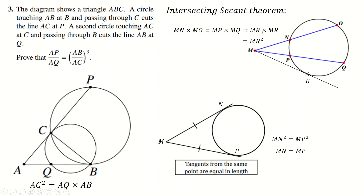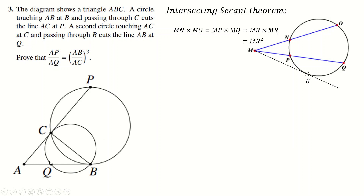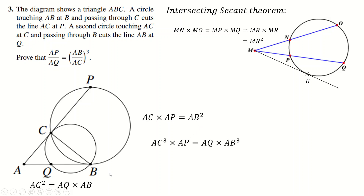This theorem almost immediately solves the question. Focusing on the smaller circle first, since AC is a tangent: AC² = AQ × AB. From the bigger circle: AC × AP = AB². Then multiply these two equations together — the left side is AC³ × AP, and the right side is AB³ × AQ. Dividing through gives AP over AQ equals (AB/AC)³, which is the answer. So if you knew this theorem, it wiped out the question almost immediately.